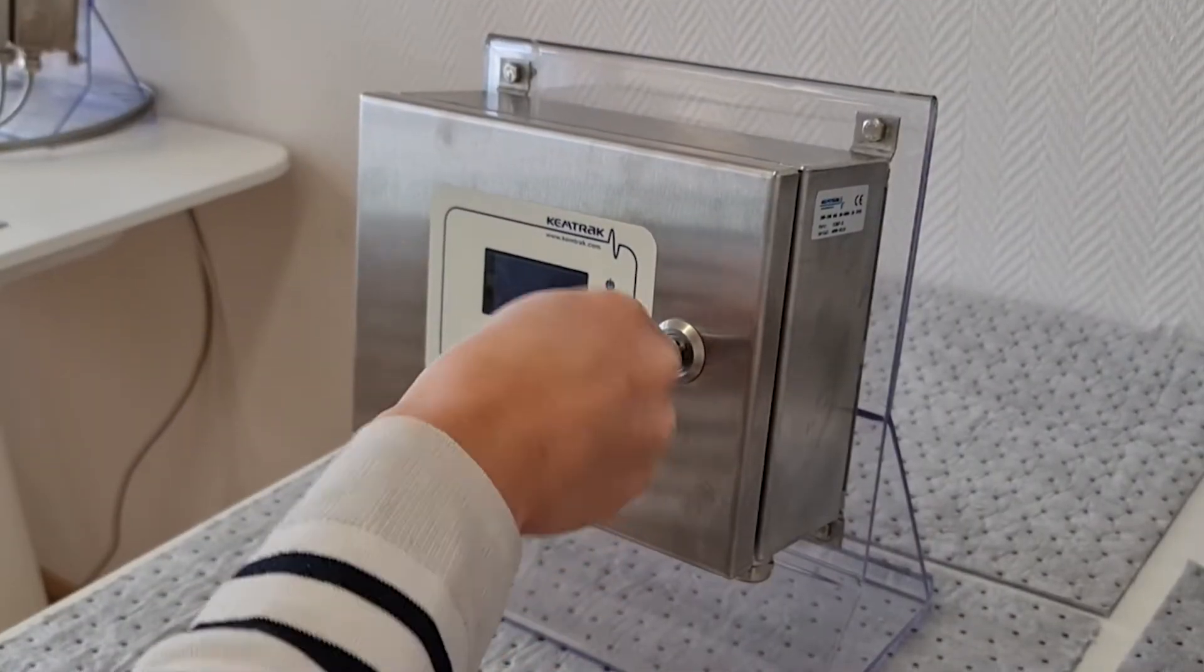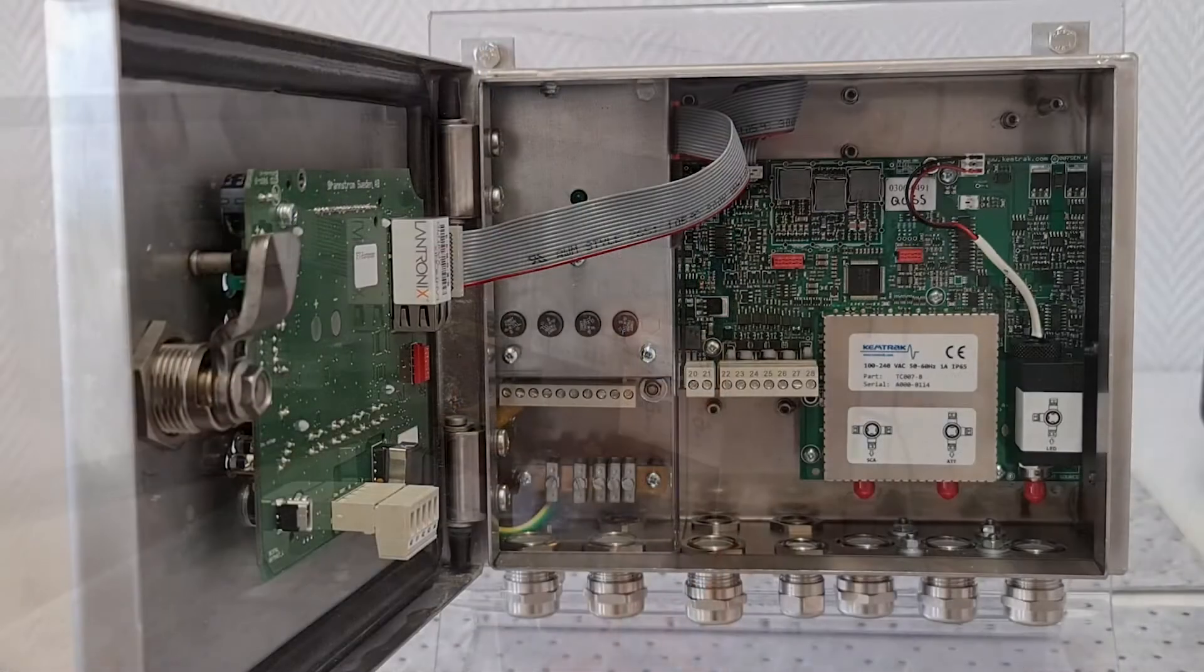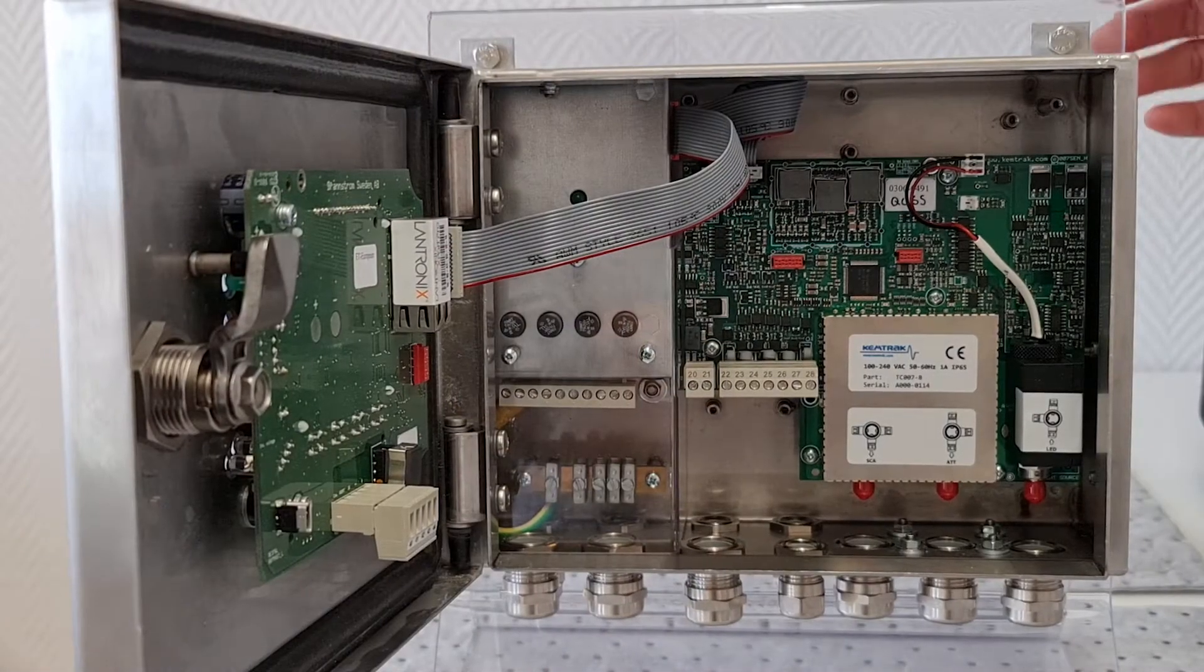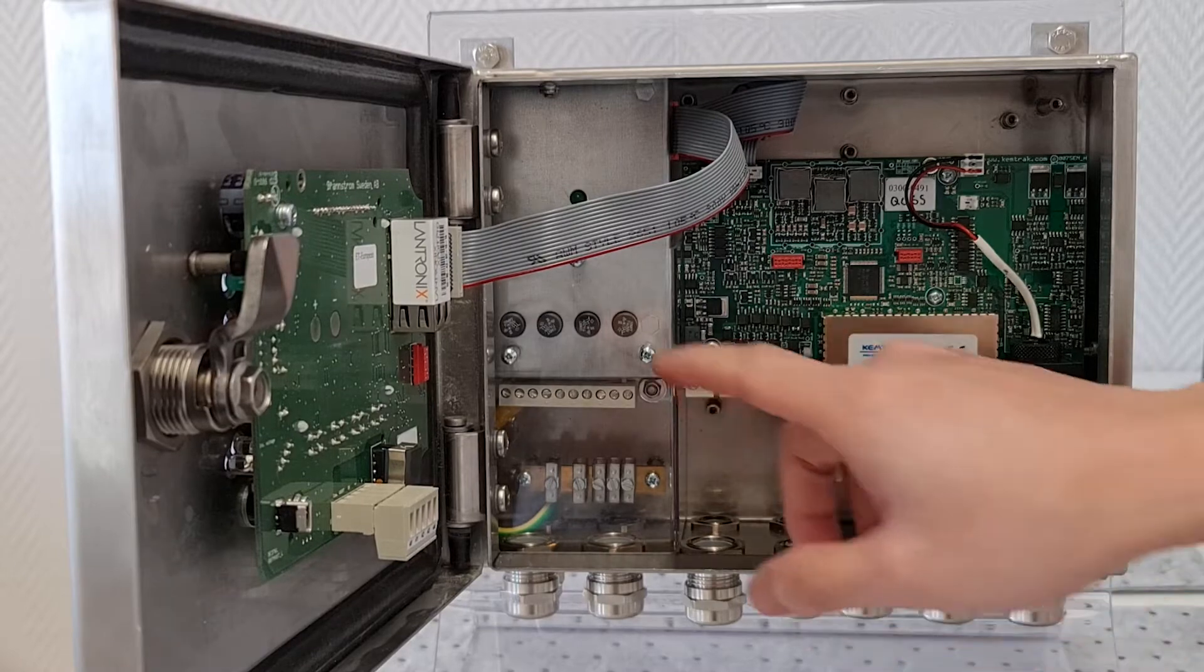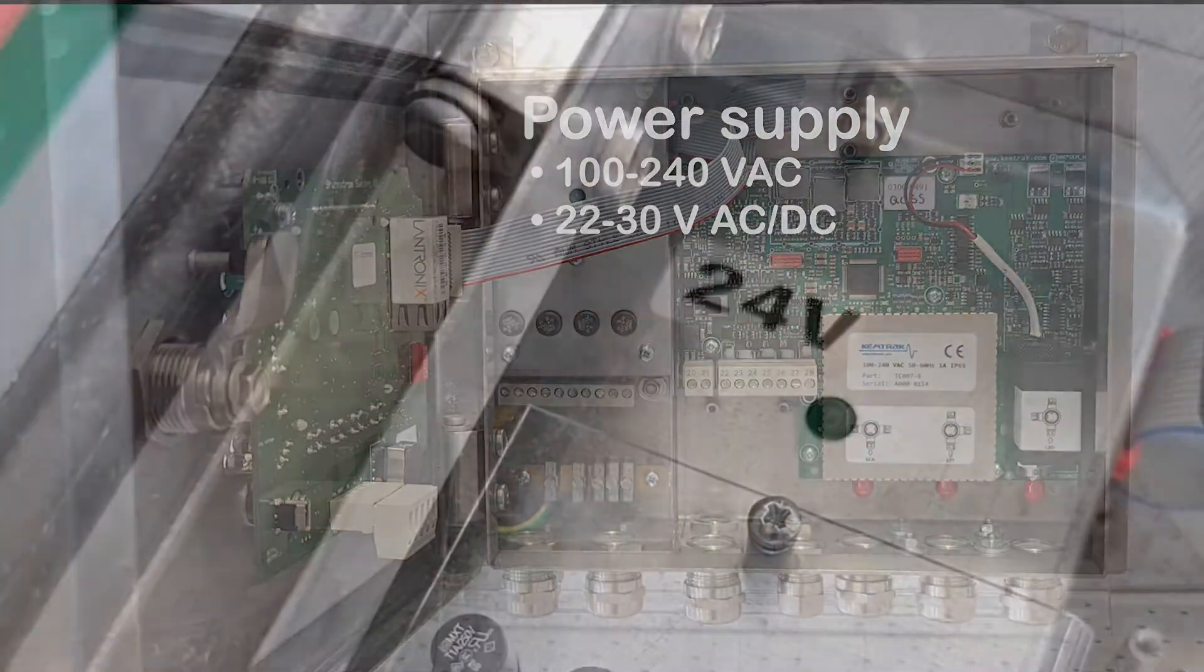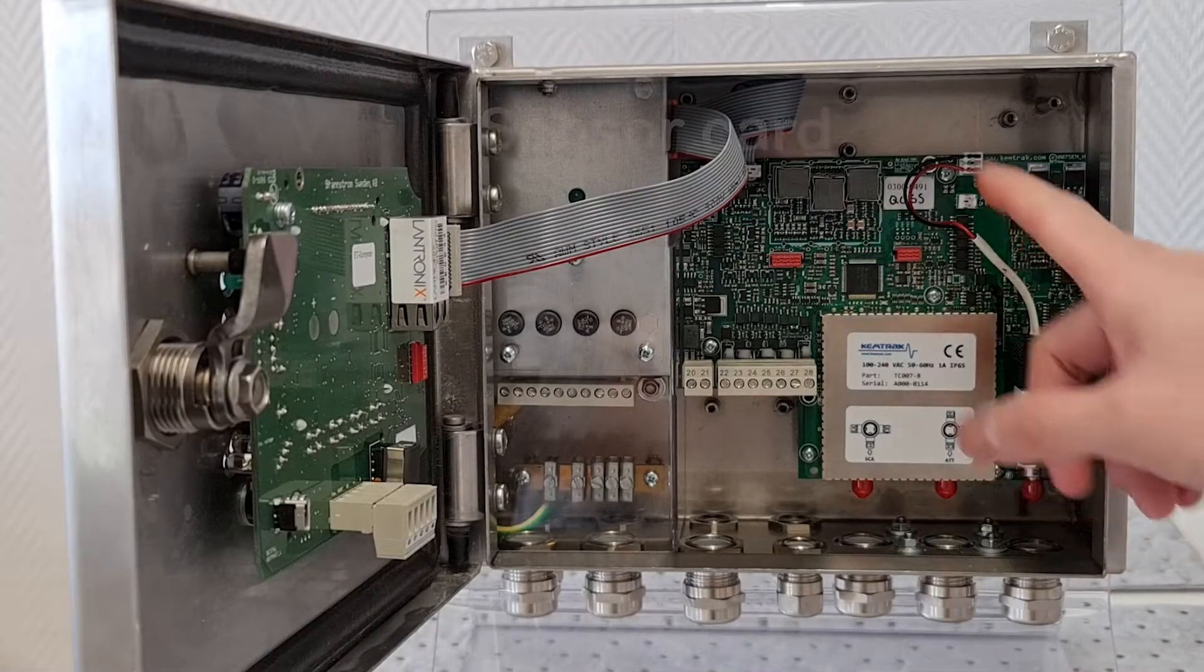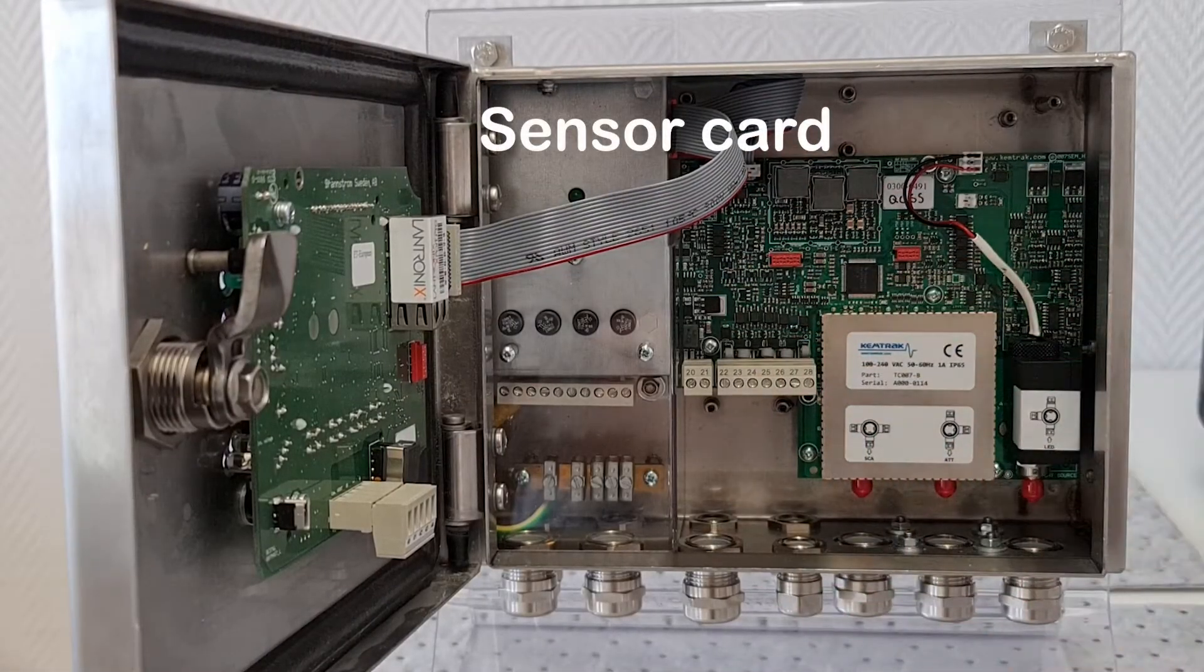Open the analyzer enclosure using the key included and we will begin by familiarizing ourselves with the various components of the analyzer. The power supply unit is located on the left side and is available in two models. The sensor card is what performs the optical measurements.